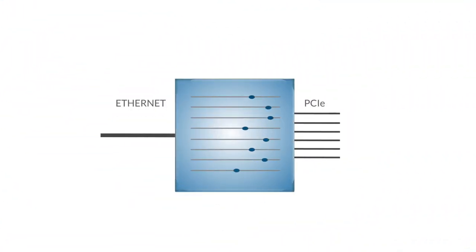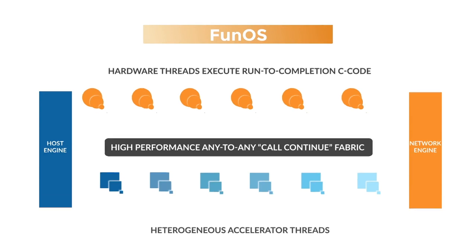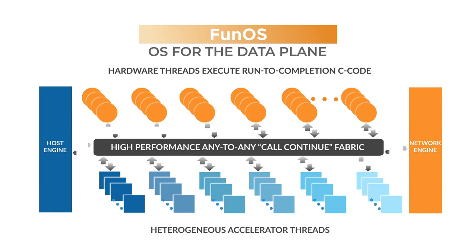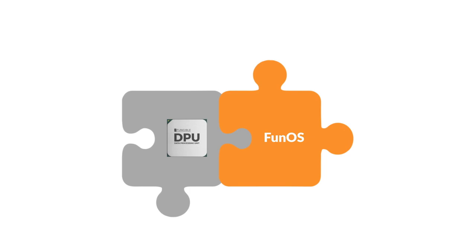Under the hood, the programmable data path in the Fungible DPU is enabled by an operating system known as FunOS. FunOS manages how data is processed in the Fungible DPU, processing parallel streams of data that traverse seamlessly between processing cores and hardware accelerators. Both Fungible DPU and FunOS are carefully co-designed to process a large number of requests coming in at line speed.